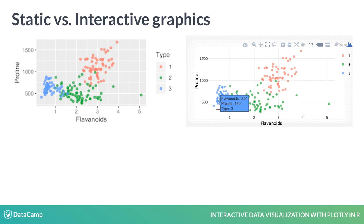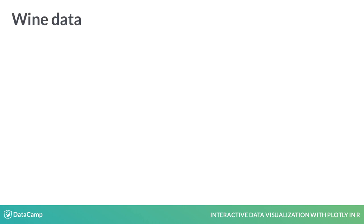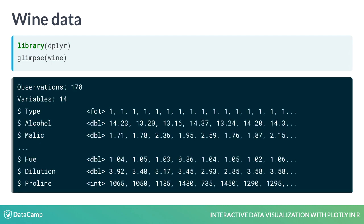Simple interactions can improve your ability to explore your data, and throughout this course you'll learn how to add these to your graphics toolkit. To begin, consider the wine dataset from the UCI Machine Learning Repository, containing the results of a chemical analysis of 178 wines all grown in the same region in Italy, but derived from three different cultivars.